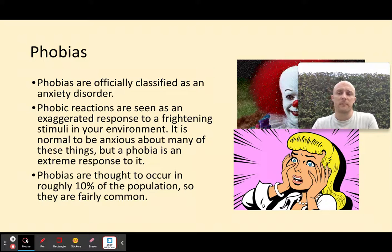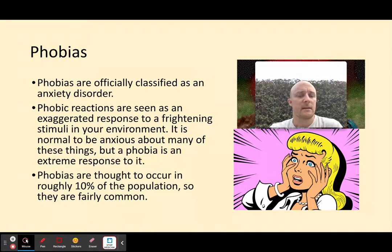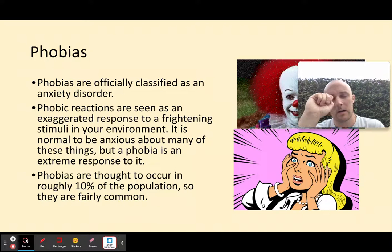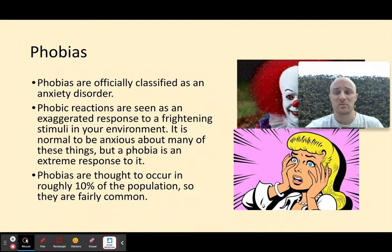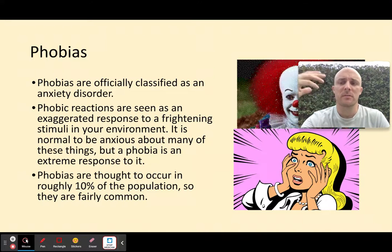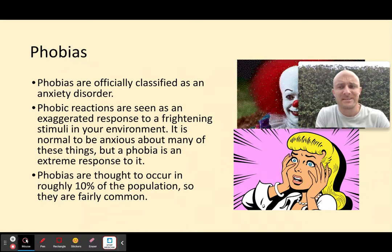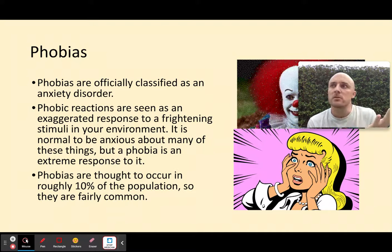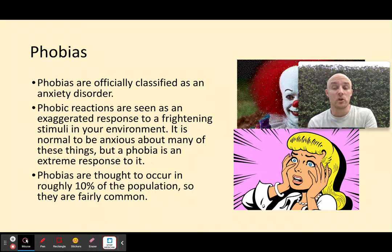We're going to start with phobias. I'm going to put my face over that clown because I don't like clowns. Phobias obviously are a type of anxiety disorder. Some symptoms appear in all three disorders, so they are comorbid. There's a lot of symptom overlap — anxiety appears in phobias, depression, and OCD. There are some symptoms that are idiosyncratic to the disorder, so they appear in that disorder and maybe not many others.